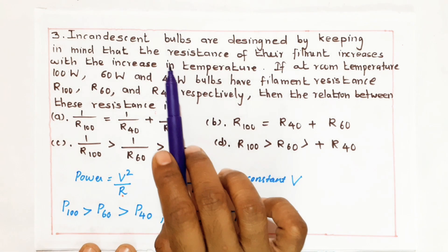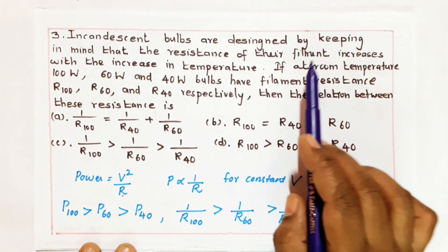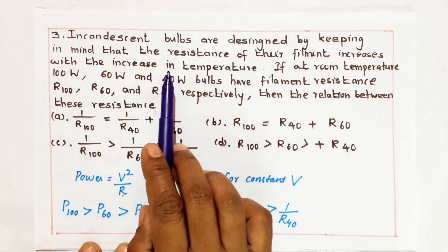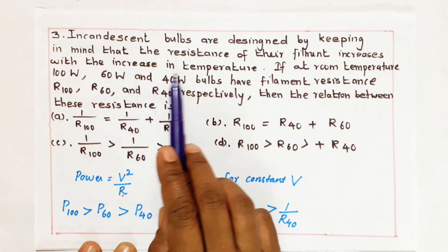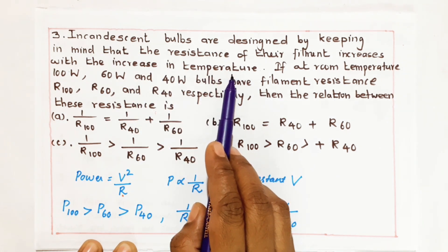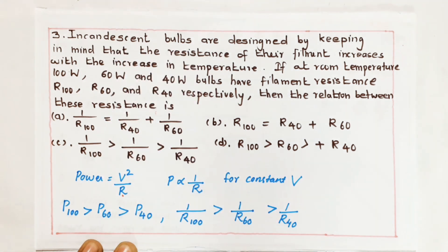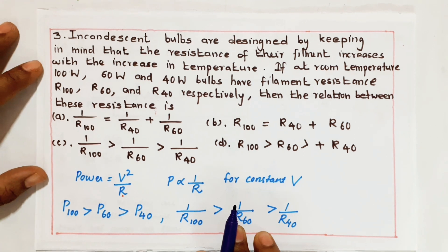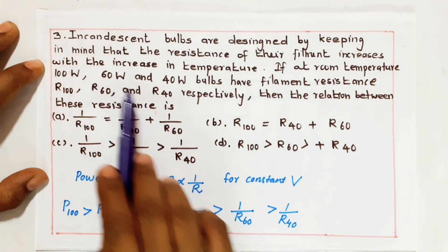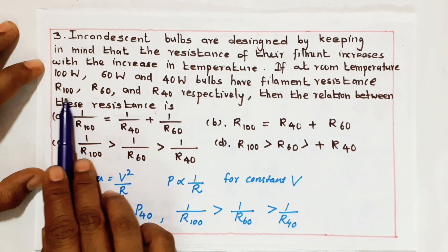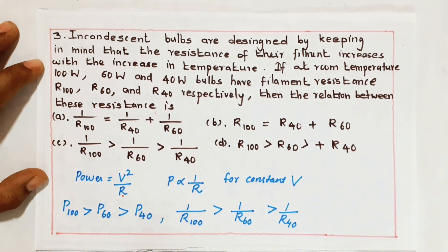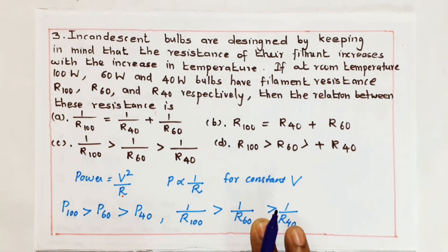See the question. Incandescent bulbs are designed by keeping in mind that resistance of the filament increases with increase in temperature. We use bulbs, so we have an idea that the resistance of the filament will increase with temperature. At room temperature, 100 Watt, 60 Watt and 40 Watt bulb filament resistances are R100, R60 and R40 respectively. Write the relation of the resistance.